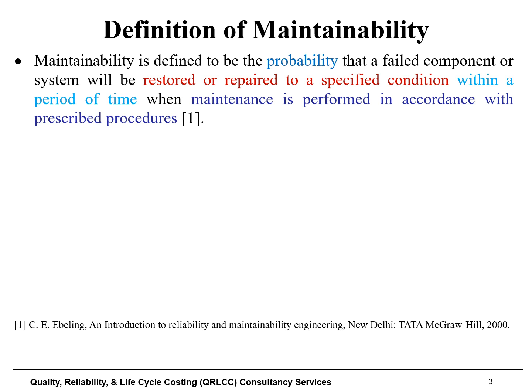Looking at this definition, you can recognize that it is based on four key terms and concepts, highlighted here in four different colors. First, maintainability is expressed in terms of probability — the probability that a failed component or system will be restored or returned. Second, it will be restored to a specified condition. Third, there is a stated period of time or time interval for which the maintenance intervention will be carried out. The fourth term states that maintenance is to be performed in accordance with prescribed procedures.